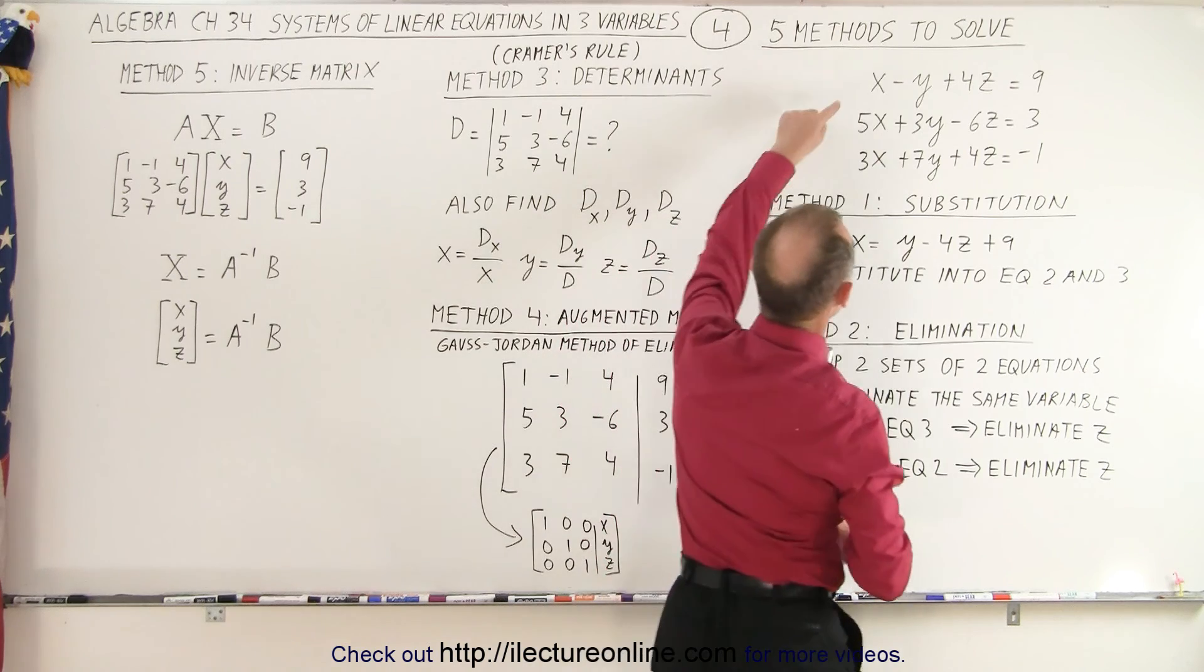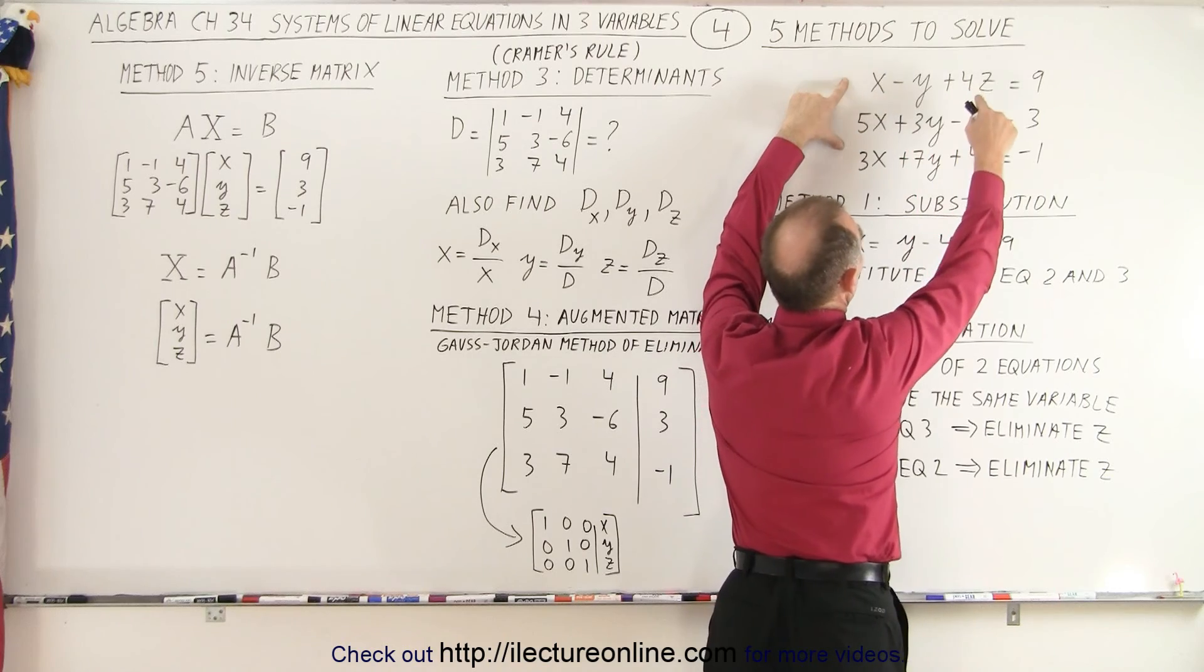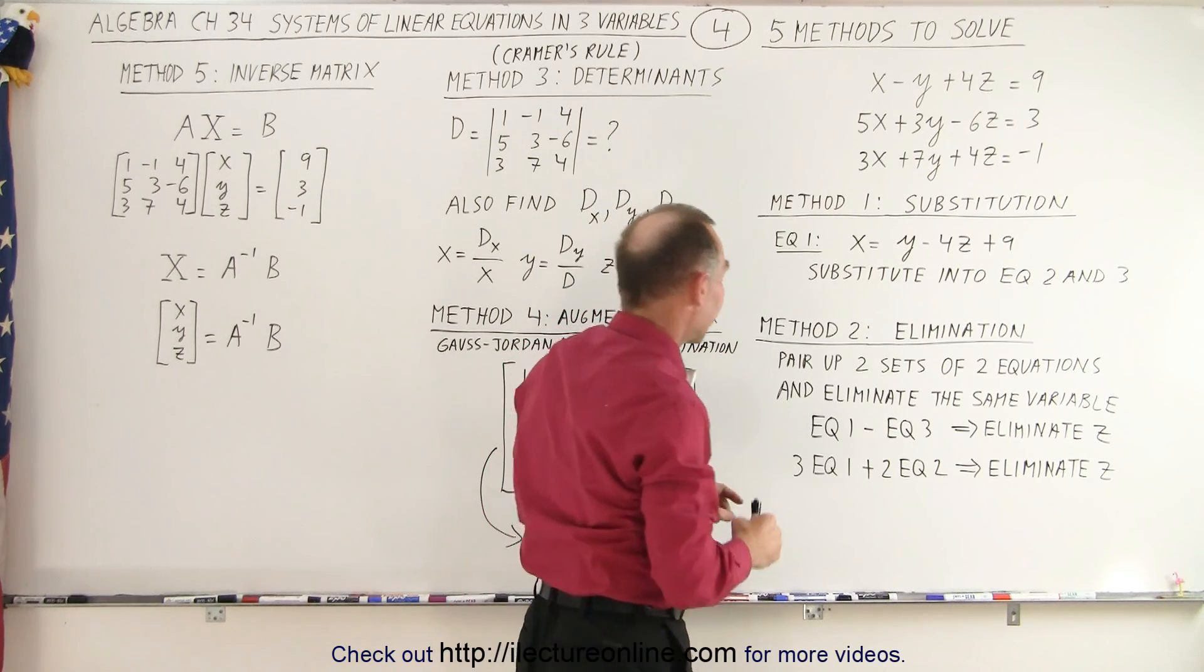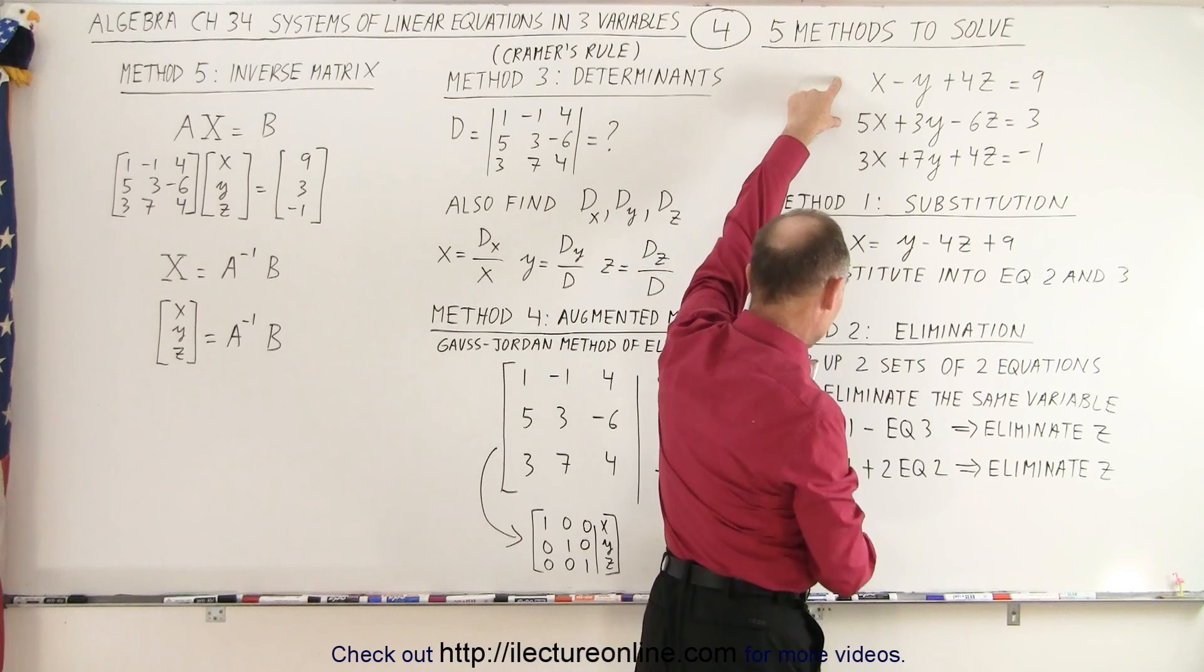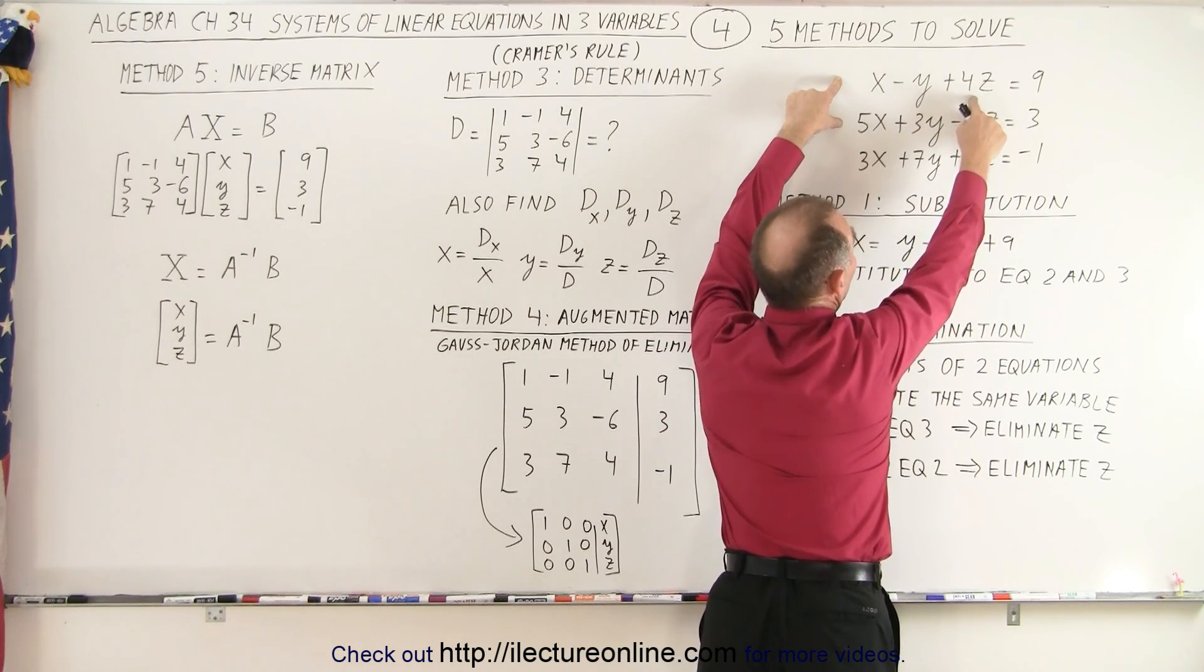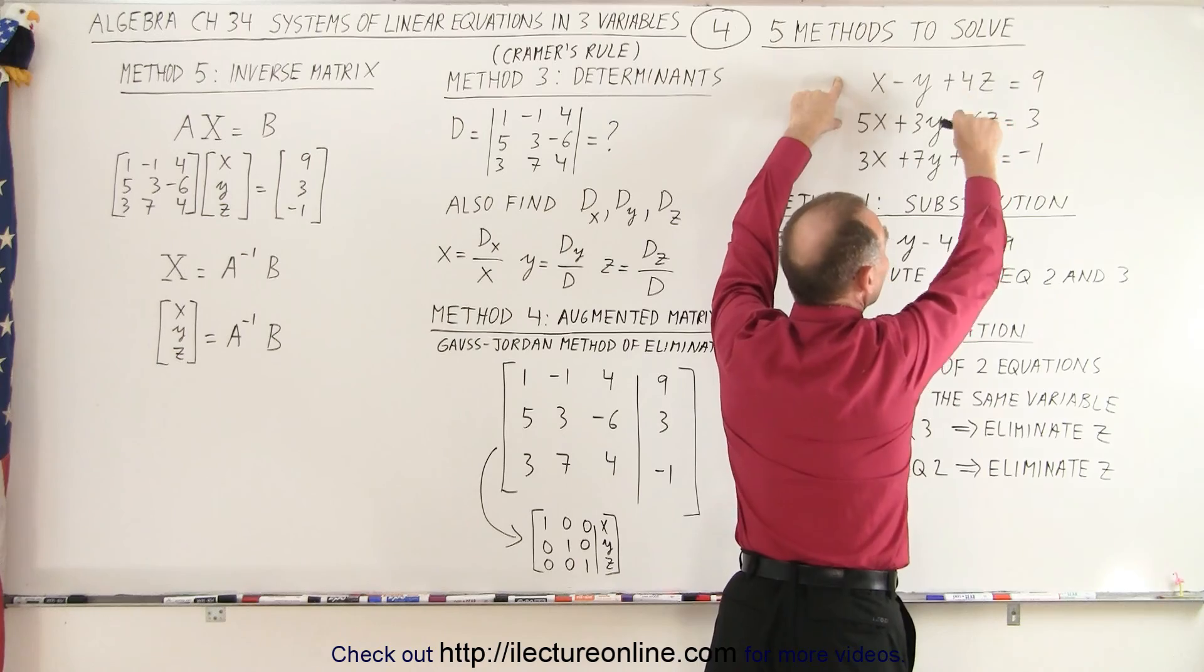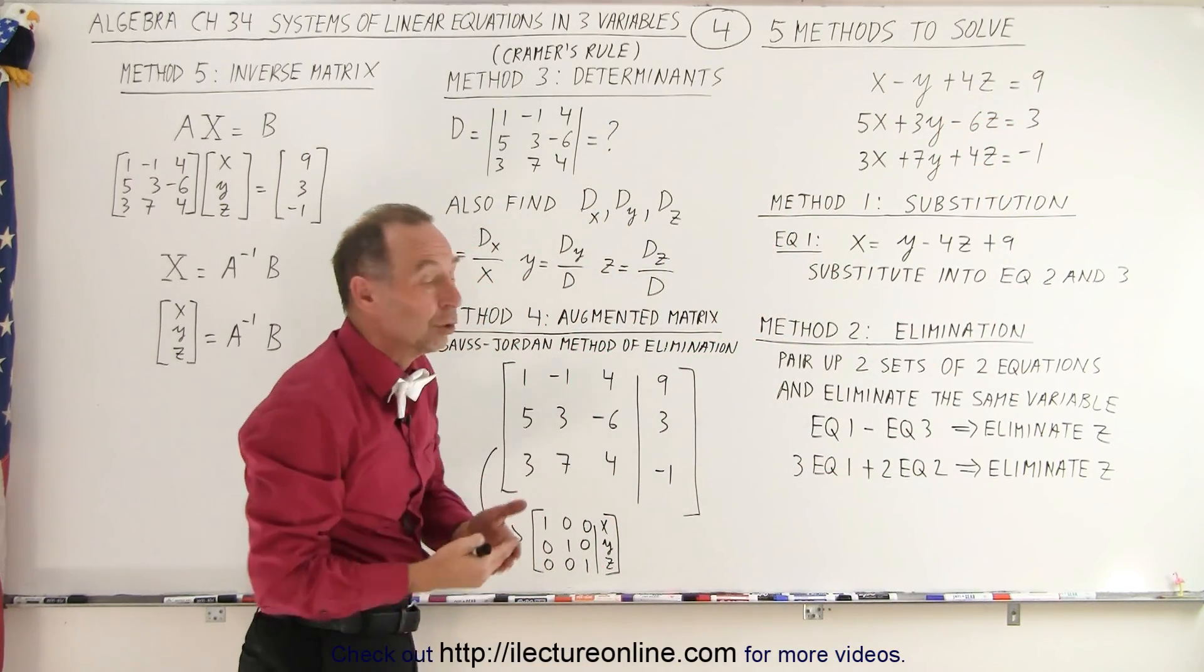Now notice, when we take the first equation and we have the third equation, if we subtract this equation from here, we end up with 4z minus 4z and the z's are eliminated from that. Then I can take equation one and equation two. What I can do is I can take three times equation one, which will make this 12z. I can take two times equation two, which will make this minus 12z. If I then add those two together, the z's drop out as well. And so we end up with two equations and two unknowns.